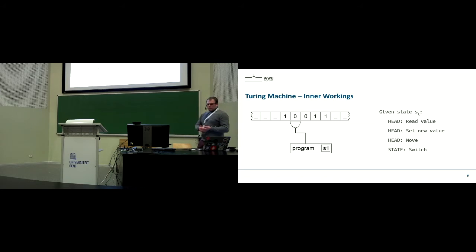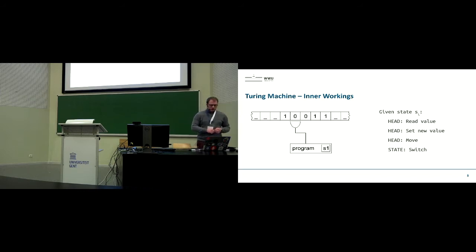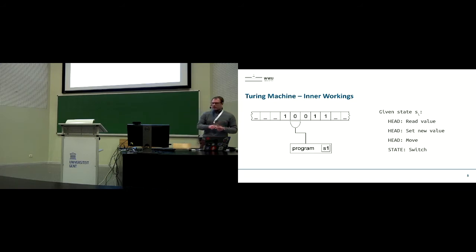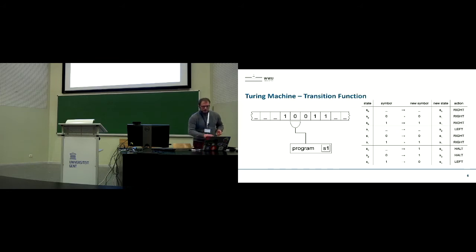Then you have a transition function, which describes how the program works — so when you are reading zero, what should be done next. The inner workings of a Turing machine are as follows: you have steps that are repeatedly executed while in a certain state, for instance state S1. You read the current value, set a new value depending on your state, move the head left or right, and then switch the state.